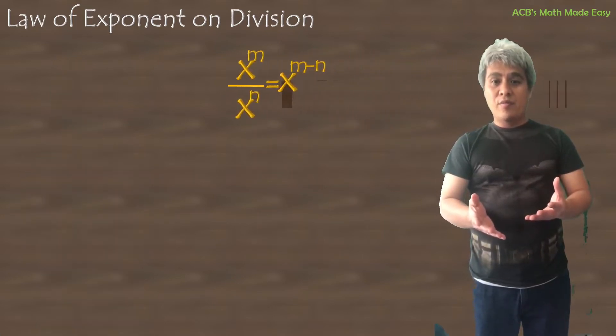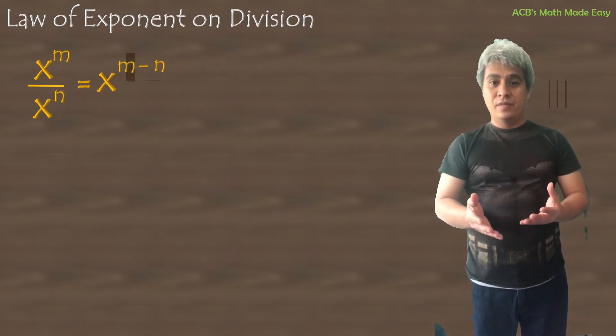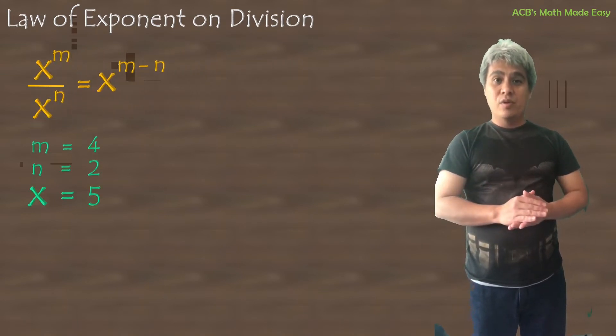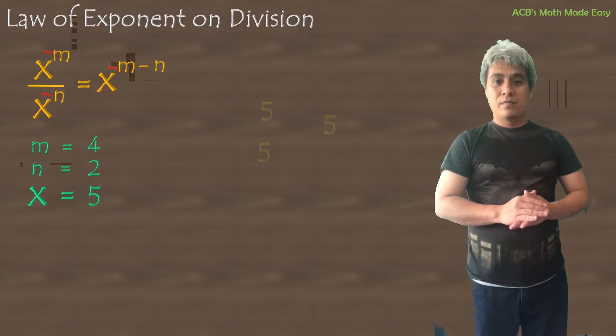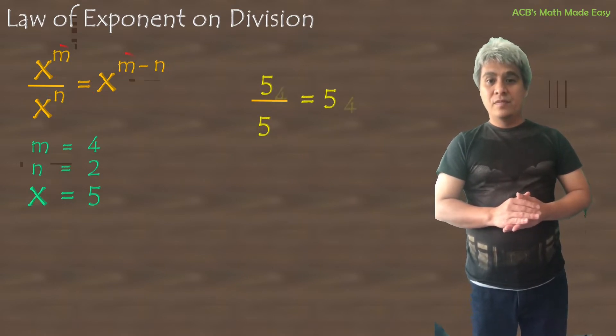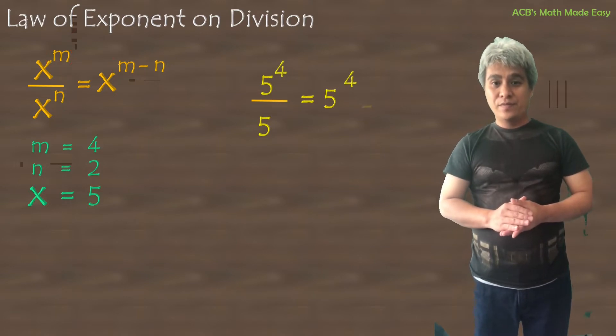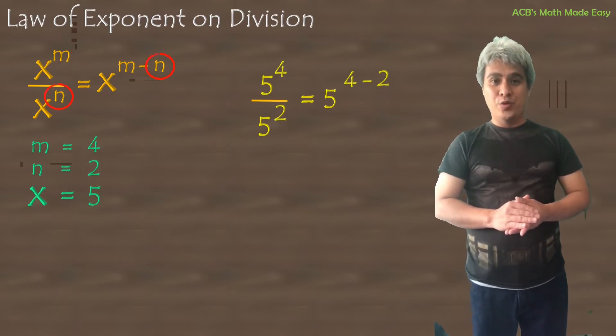This is again our formula on division. And these are the values we put. The value of x is 5, the value of m is 4, the value of n is 2.